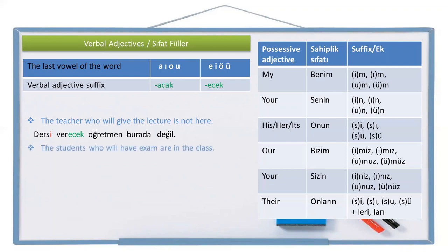Another example: the students who will have an exam are in the class. Student is öğrenci, students is öğrenciler. Have is ol, with the verbal adjective suffix: olacak. Sınav olacak öğrenciler — the students who will have an exam. Are in the class — sınıfta. So: sınav olacak öğrenciler sınıfta.